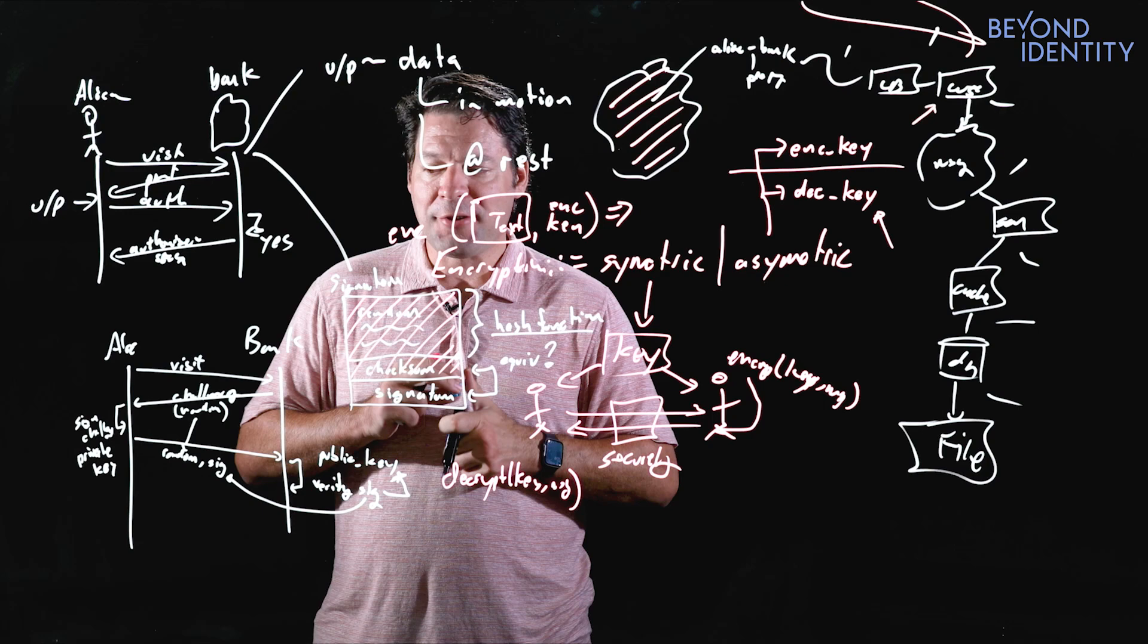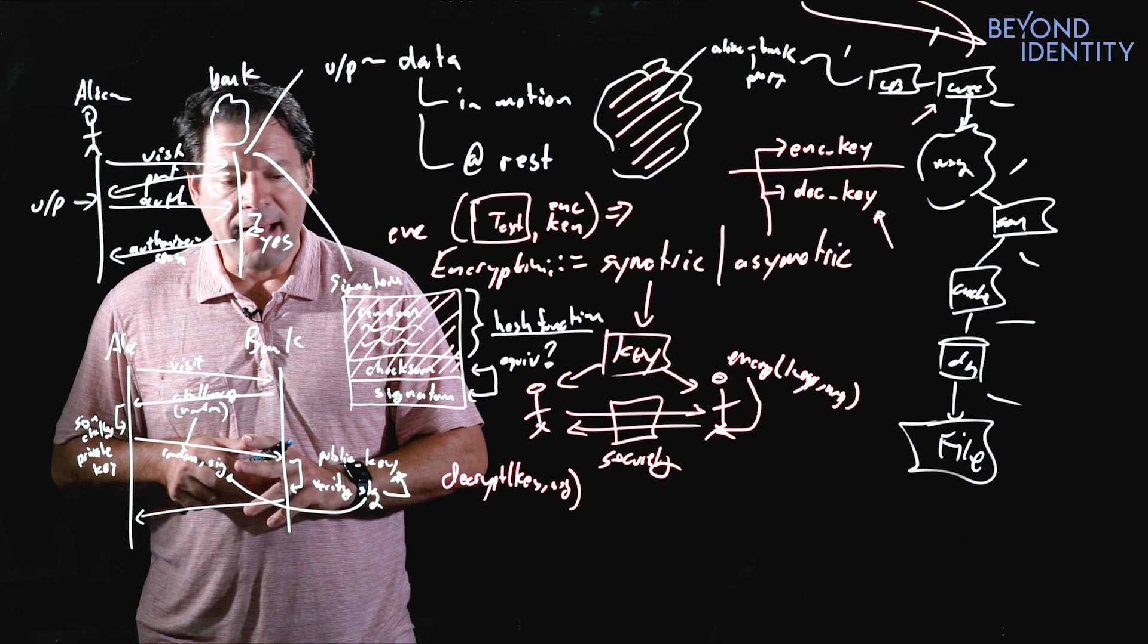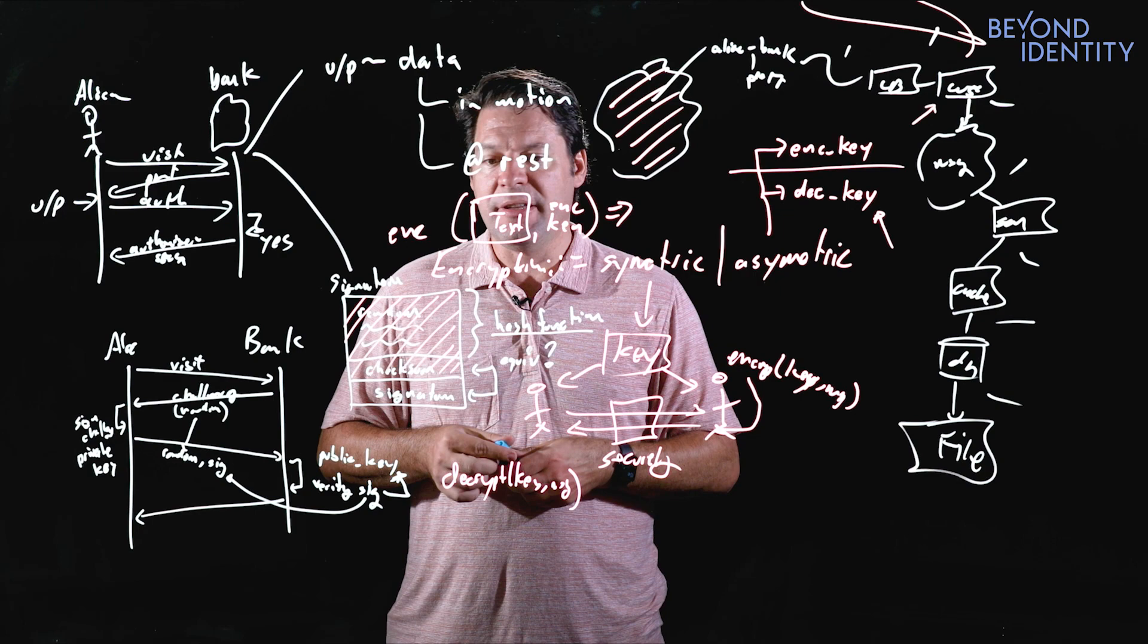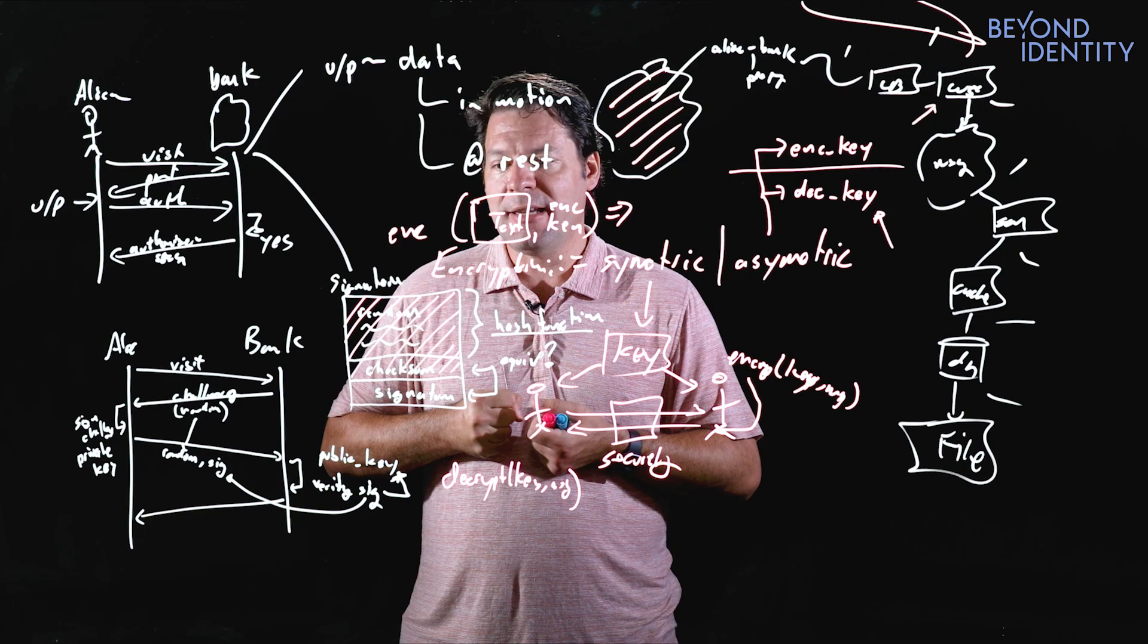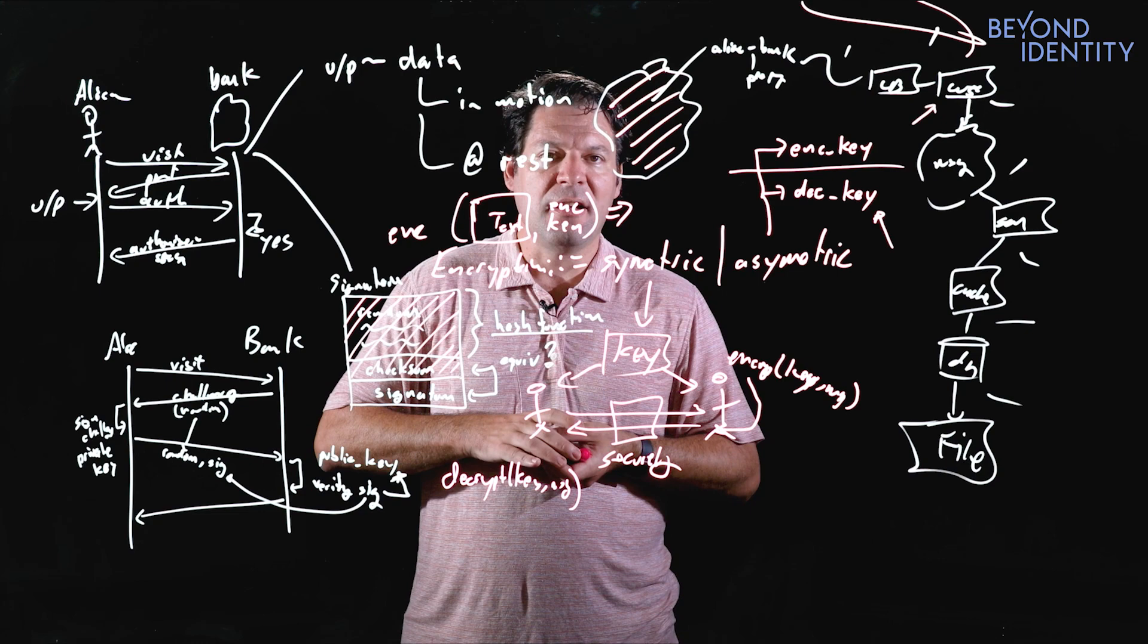This lets me complete the verification that Alice does hold the private key. I can use asymmetric cryptography, specifically digital signatures, to let Alice prove the authentication step—she has a private key, and that private key never has to leave the device Alice is on.